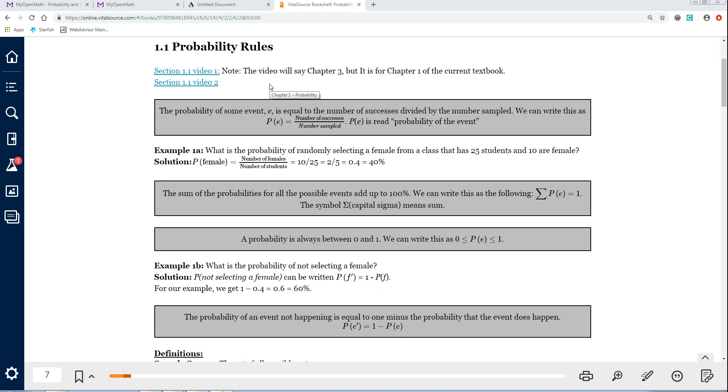Okay, this is some basic probability rules. The first thing is that the probability of some event E is equal to the number of successes divided by the number sampled.